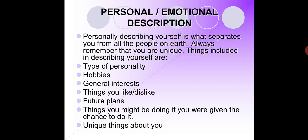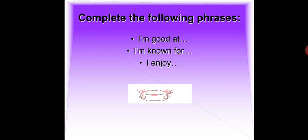If you don't know how to describe yourself fully, you can complete the following phrases: I'm good at, I'm known for, and I enjoy. For example: I'm good at cooking, I'm known for playing video games, I enjoy my favorite cup of tea reading my favorite book on a lazy Sunday afternoon.